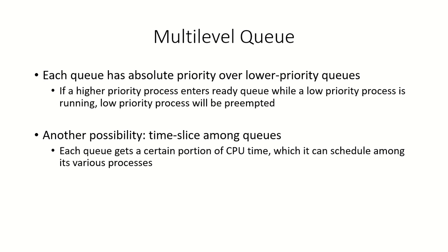Each queue has absolute priority over lower priority queues. That means if a low priority process is running and a higher priority process enters the ready queue, the low priority process will be preempted and the higher priority process will be scheduled first.